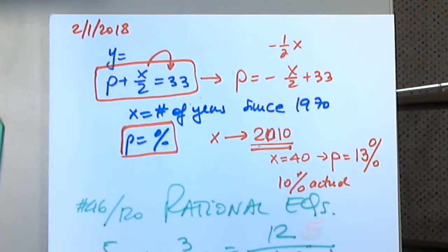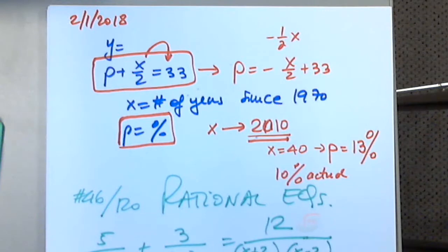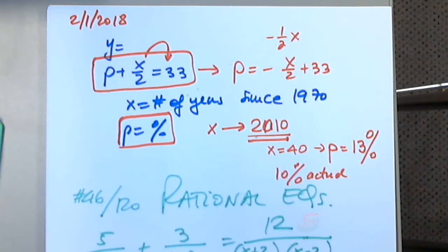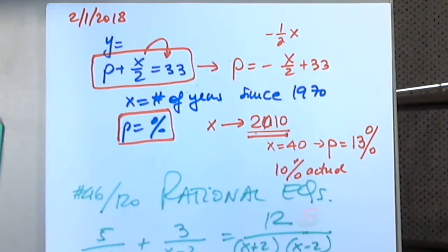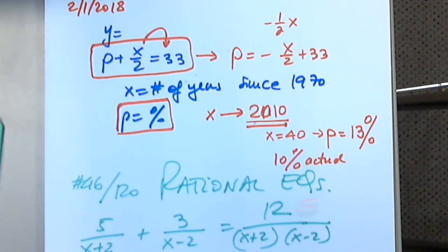What do we know about dividing numbers? For example, 5 divided by 0 is undefined. 1 divided by 5 is 0.2, and 0 divided by 10 is 0. So I have a concern whenever I solve rational equations — I must avoid dividing by zero.